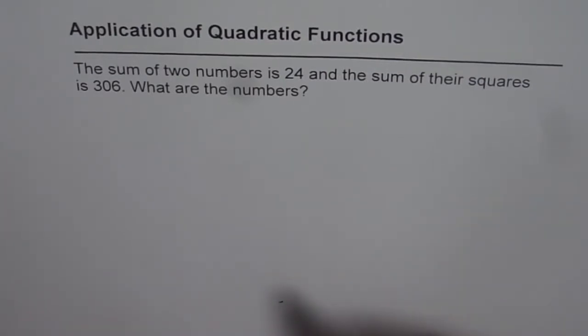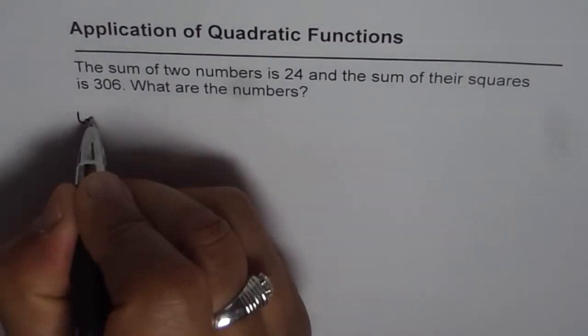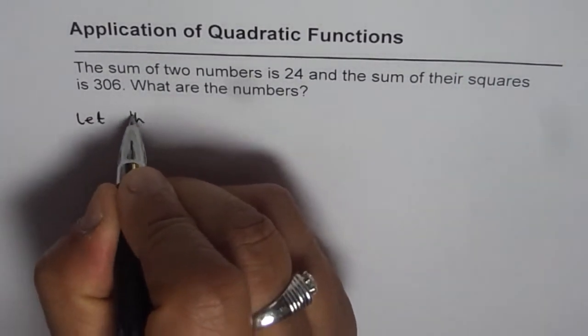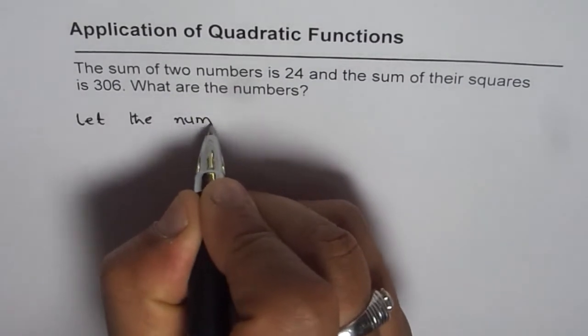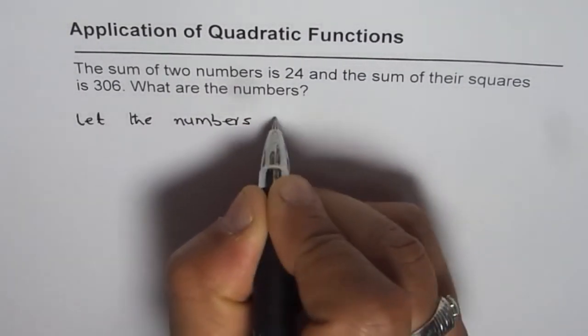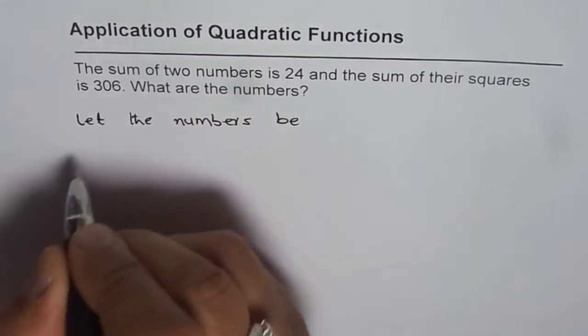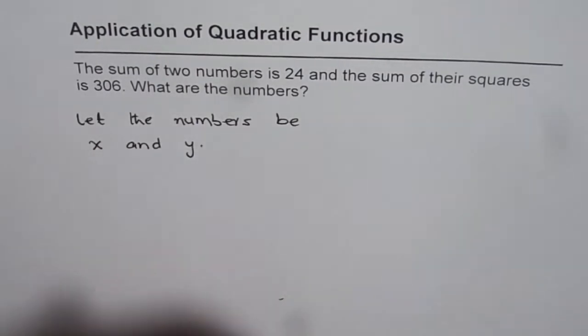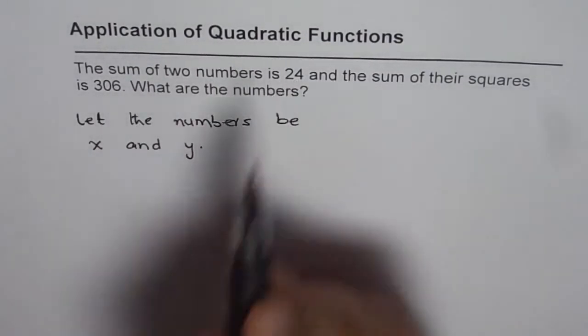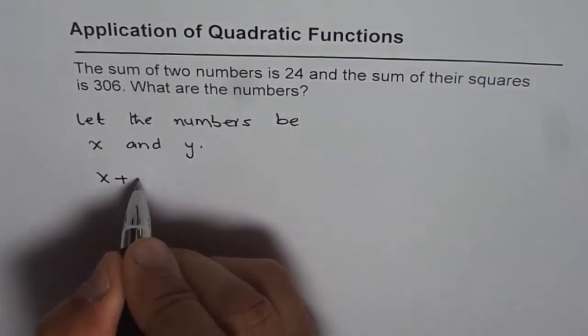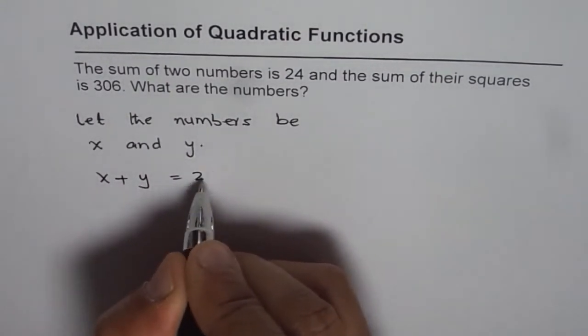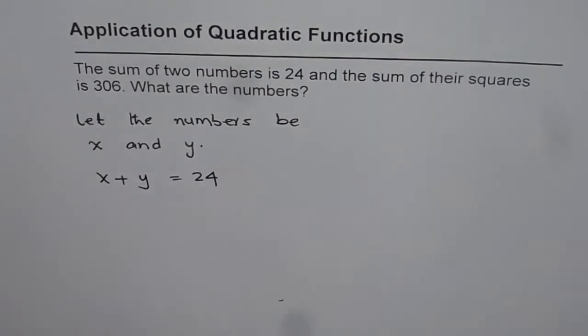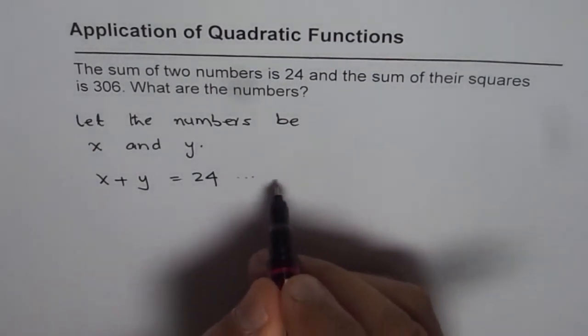Let us first define variables for the numbers. Let the numbers be x and y. Now it says sum of two numbers is 24, that means x plus y equals 24. So we get one equation. Let us say this equation is equation number 1.